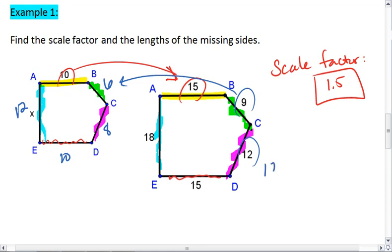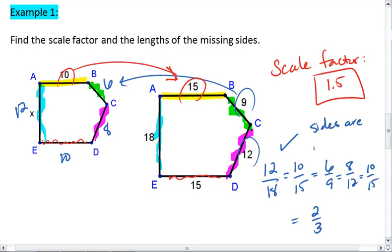We can double check. We know that 12 over 18, our blue sides, is equal to 10 over 15, which is equal to 6 over 9, which is equal to 8 over 12, which is equal to 10 over 15, all of which is equal to 2 thirds. So every one of these fractions reduces to 2 thirds. And that's how we check to make sure that our sides are proportional.